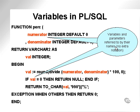Variables and parameters are all referred to by their own names. Some database languages require that you put colons before the variable name. That is not the case in Oracle, as you can see. Parameters, numerator and denominator, are referred to as numerator and denominator. And the locally-declared VAL variable is referred to as VAL.